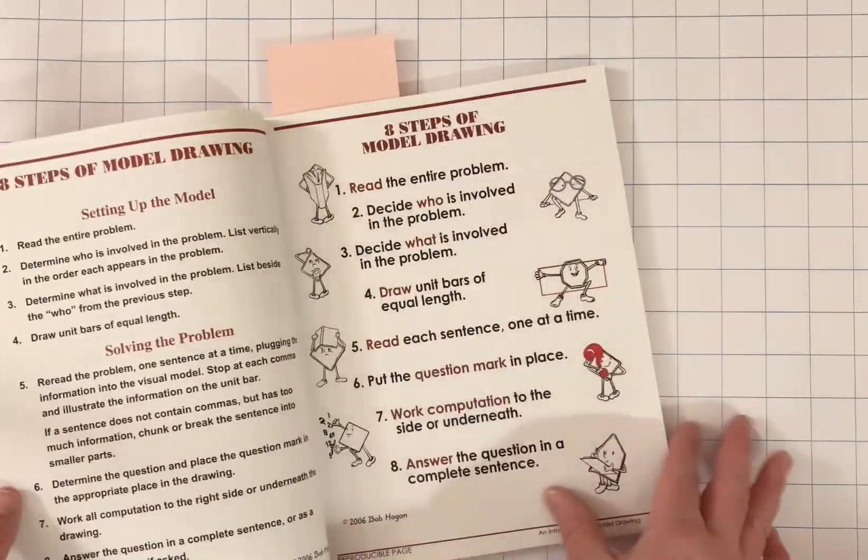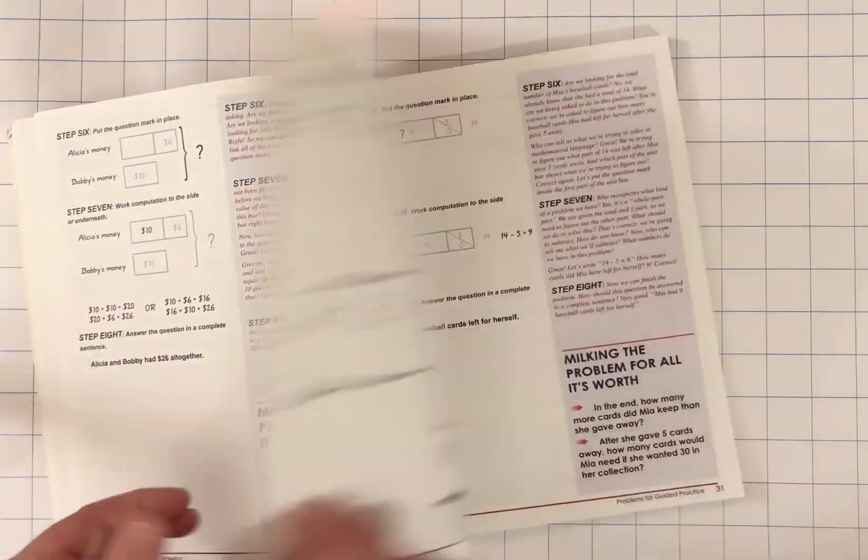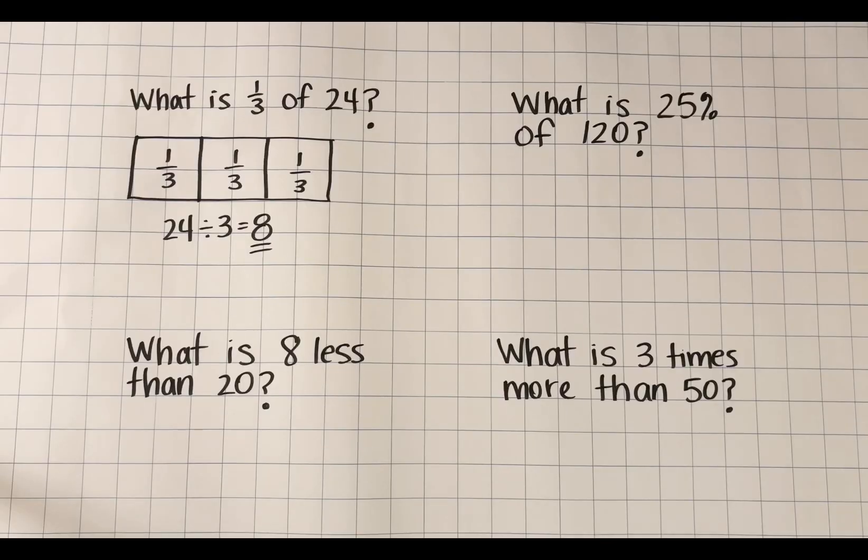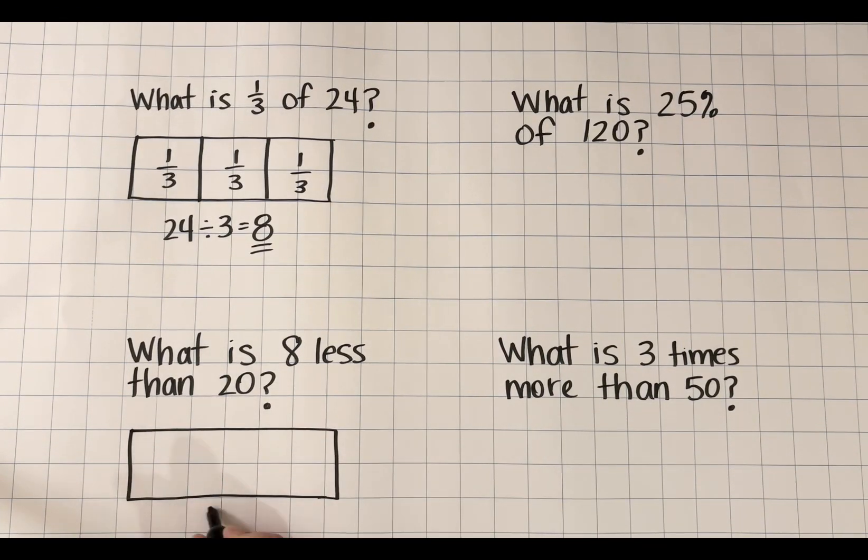Today I sat down and went through this book that I've been meaning to read for a while now called 8-Step Model Drawing. This book is based on the Singapore math strategy of drawing bar models to solve word problems.